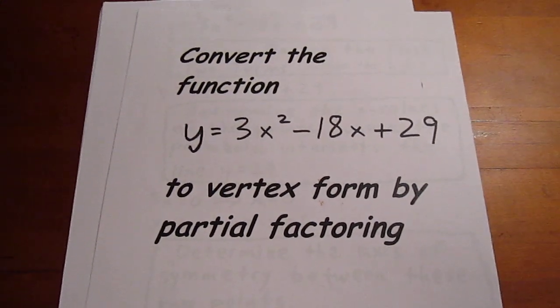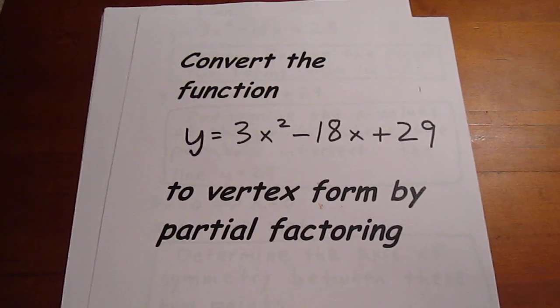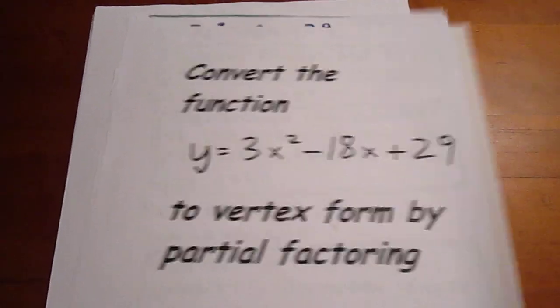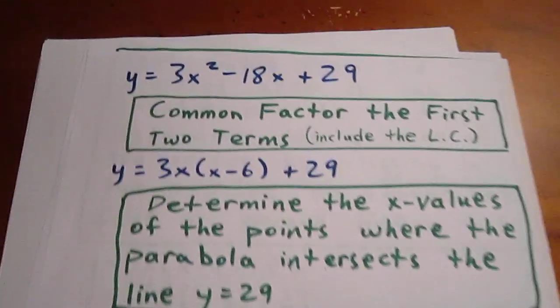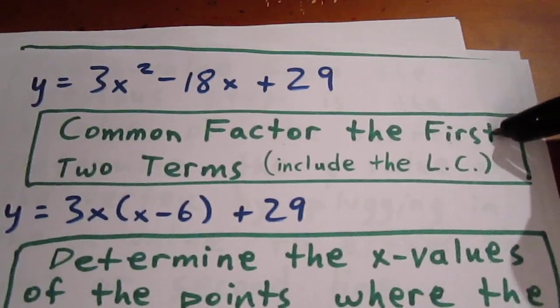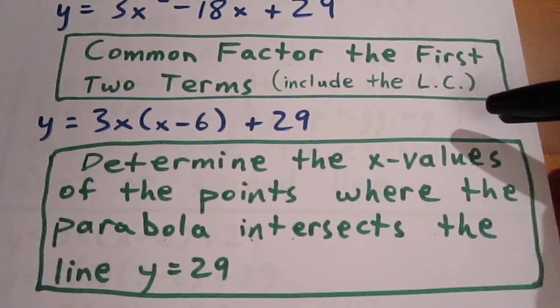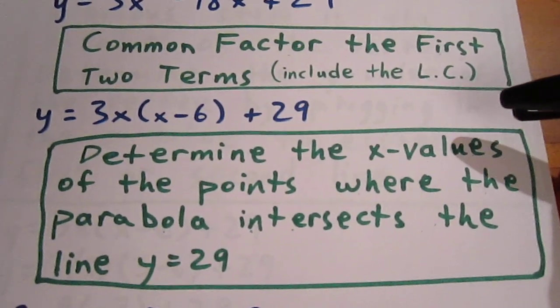We're going to convert the function y equals 3x squared minus 18x plus 29 to vertex form by partial factoring. The way we do that is to common factor the first two terms and we include the leading coefficient in that. So we have 3x times x minus 6 plus 29.